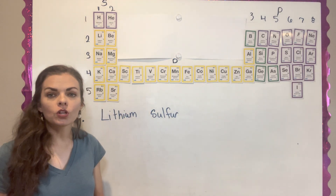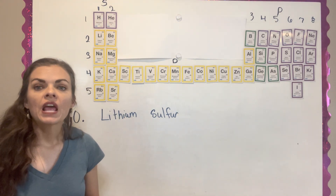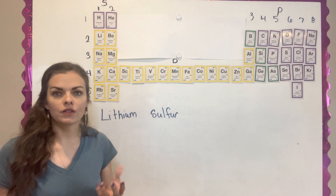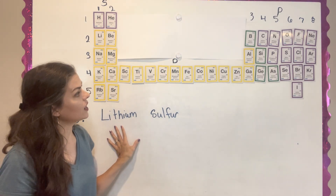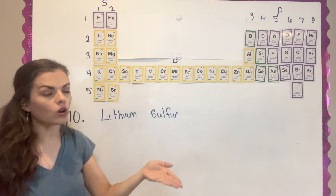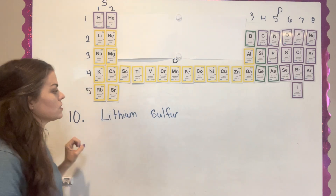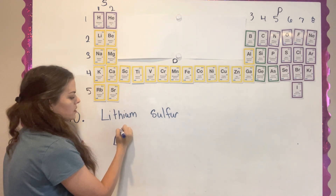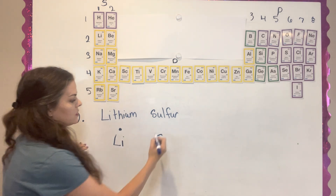Question ten, we're going to learn how to make ionic compounds. It gives you two elements — lithium and sulfur — and we're going to combine them to make a compound. An ionic compound forms when elements either give away or take electrons. Lithium is the metal giving away electrons, and sulfur is the non-metal taking electrons. Lithium has one valence electron, and sulfur has six valence electrons.